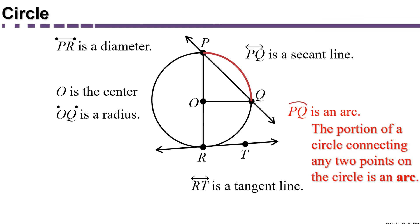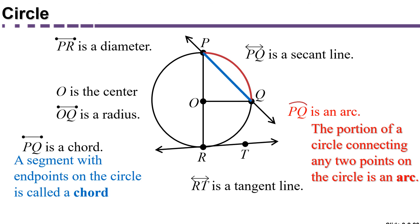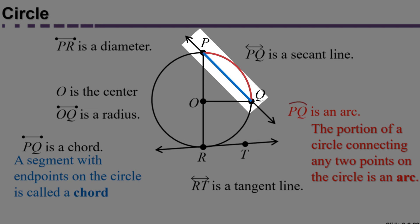On the other hand, between P and Q we also have a line segment. A segment with endpoints on the circle is called a chord. This blue portion between P and Q is called a chord.